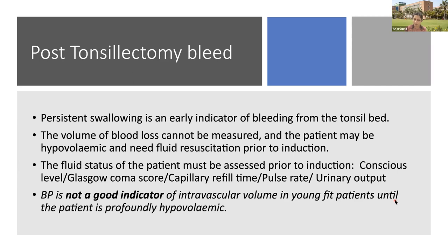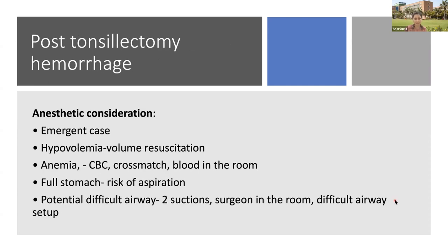Blood pressure is not a good indicator of intravascular volume in young fit children until they are profoundly hypovolemic. Children compensate to a large extent — up to 35% of blood volume lost is compensated by tachycardia and will not reflect as hypotension. For post-tonsillectomy hemorrhage, anesthetic considerations include that it will be taken up as an emergency where senior staff may not be available. Volume resuscitation should be initiated immediately. The child will be anemic — CBC and crossmatch should be ordered and blood arranged, though we should not wait for it. The patient is full stomach with risk of aspiration and potential difficult airway, so two large bore suctions should be immediately available.